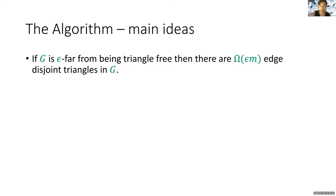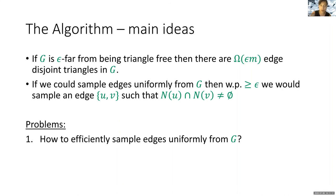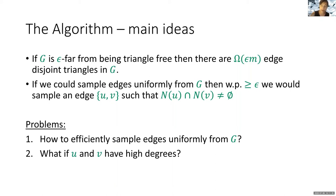What are the main ideas of our algorithm? Assume there is a graph which is epsilon-far from being triangle-free. Then we know that we have Ω(ε·m) edge-disjoint triangles in G. If we could sample edges uniformly from this graph, then with probability at least epsilon, we would sample an edge (u,v) such that the neighbors of u intersect with the neighbors of v. A problem with this approach is that it is not clear how to sample edges uniformly from a graph for which we do not have any bound on its density. And the other problem is that both u and v might have high degrees.